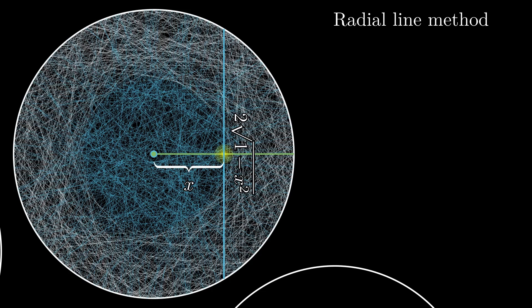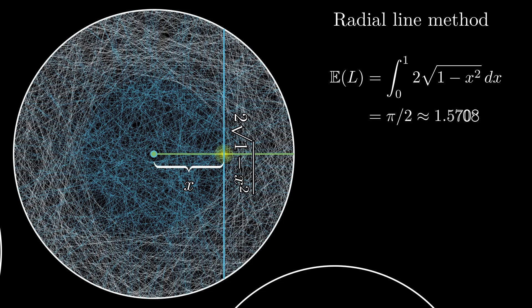As x is uniformly distributed in a radius of length 1, the expected length of the chord is the integral of twice the square root of 1 minus x² as x ranges from 0 to 1. This is a simple integral that evaluates to π/2 or about 1.57.